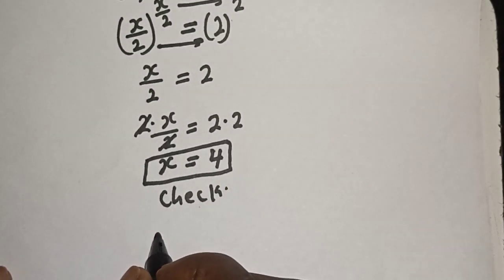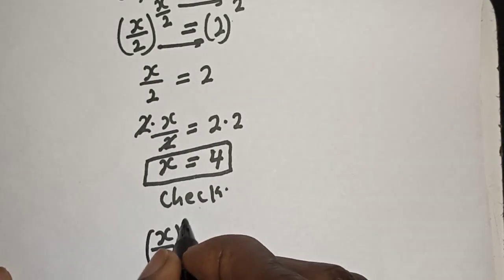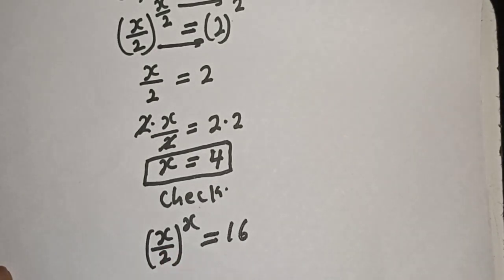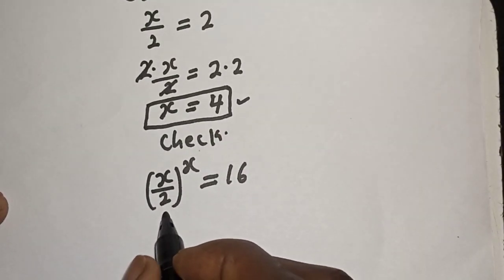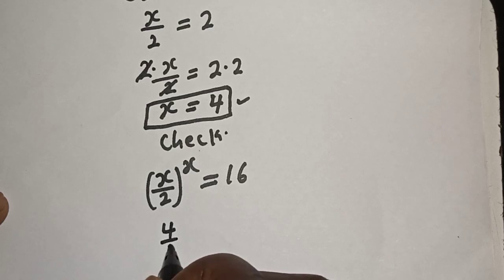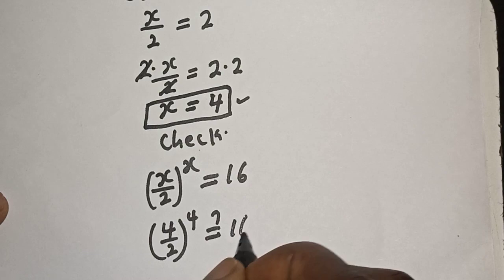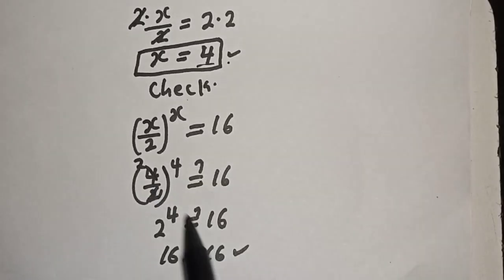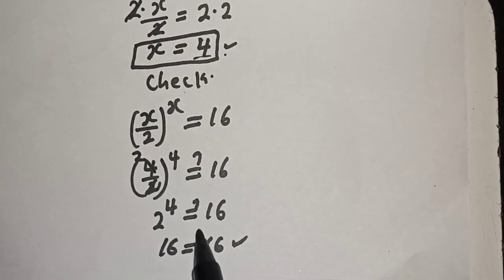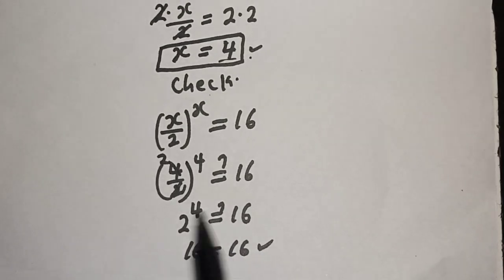Let's check: substituting s equals 4 into the given equation (s over 2) raised to power s equals 16. We get (4 over 2) raised to power 4, which is 2 raised to power 4, which equals 16. This equals 16, which satisfies the given equation at s equals 4.